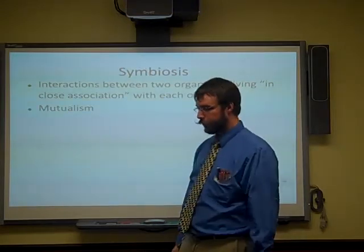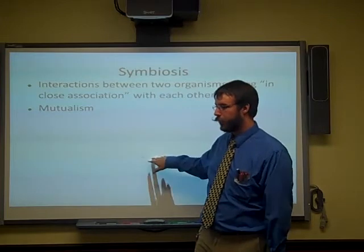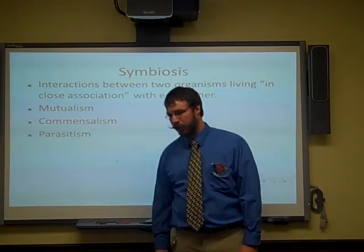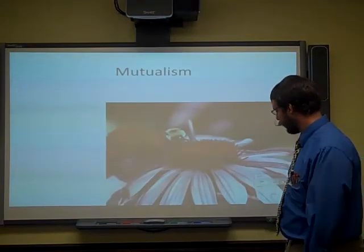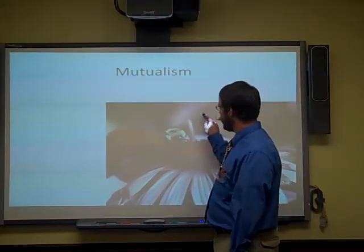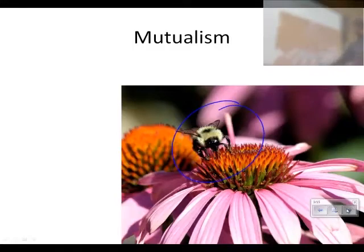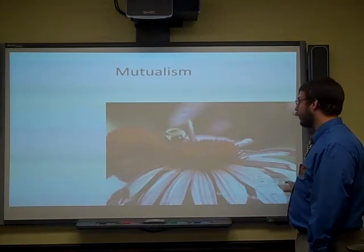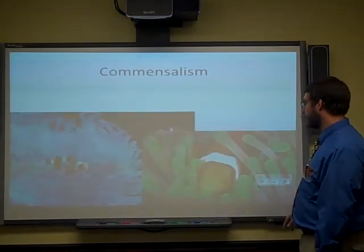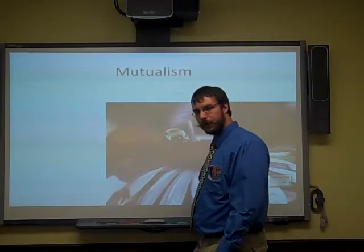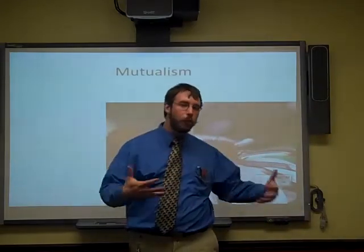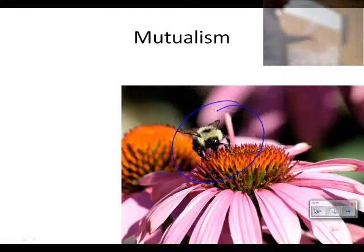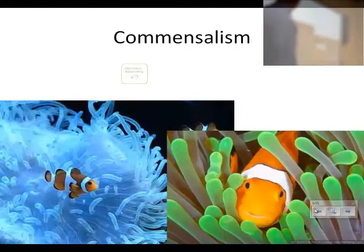There's mutualism, commensalism, and parasitism — all types of symbiosis. Mutualism is a situation where two organisms live together and they are both benefiting. Here the bee and also the flower are both benefiting from the situation. That's mutualism — a mutual benefit for both.